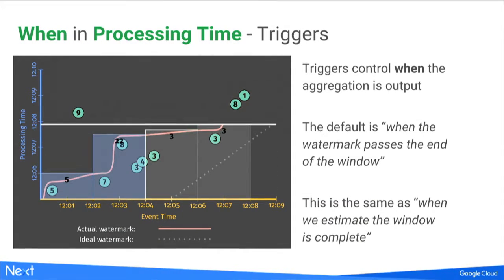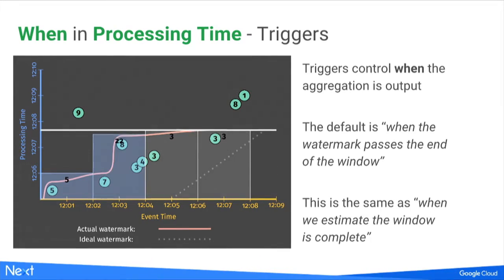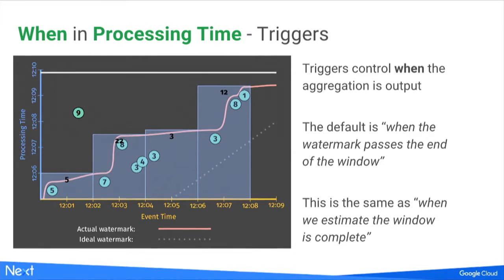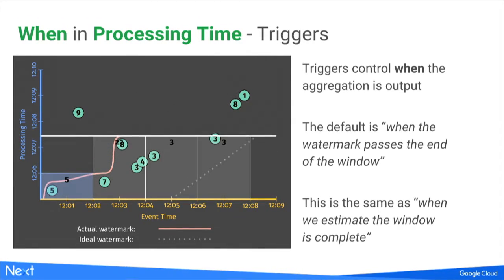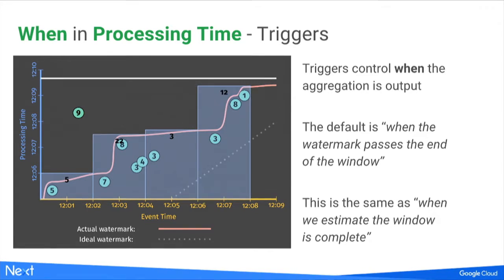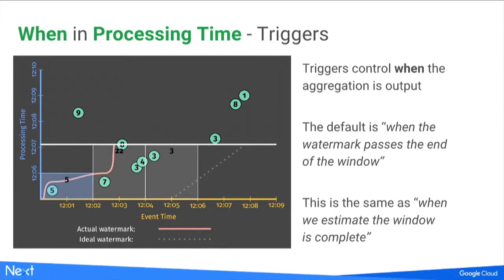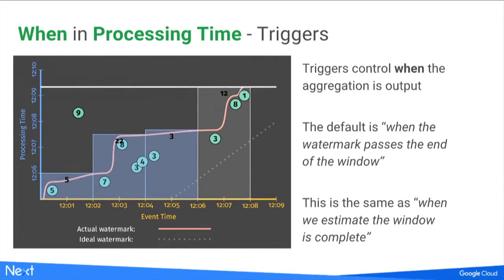Looking at this example with two-minute event-time windows closed by the watermark: as processing time moves forward, we know when to close the window when the watermark passes the window boundary. Notice one event with a value of 9 is not included in any window — it was late data that was emitted by a source after the watermark already advanced, perhaps from a phone that was in airplane mode for six hours. The late-data trigger API in Dataflow allows you to handle that and emit an updated aggregation.